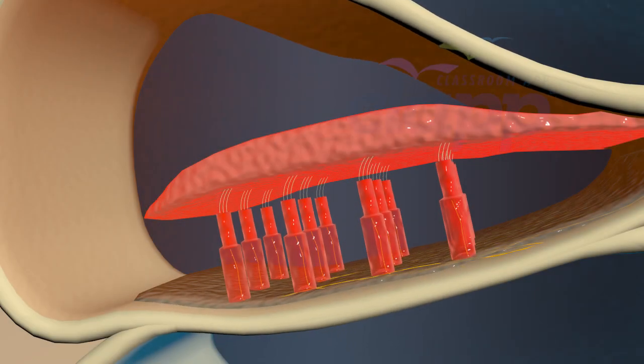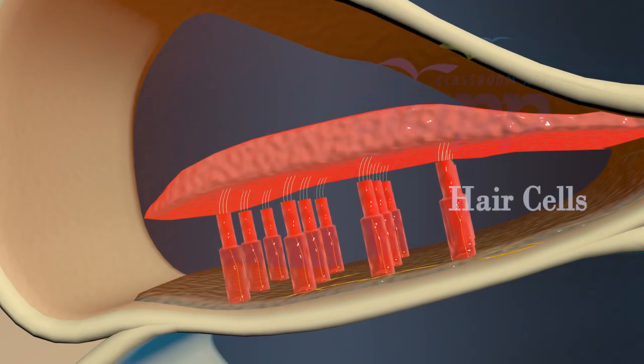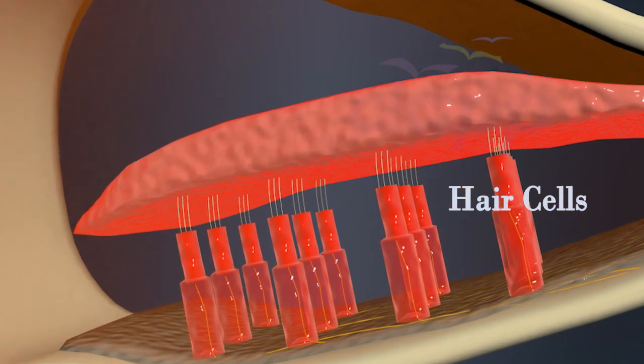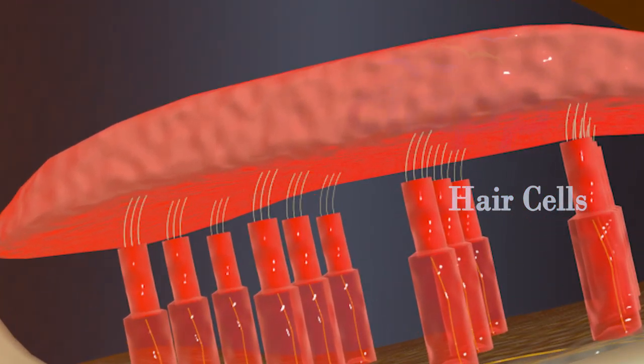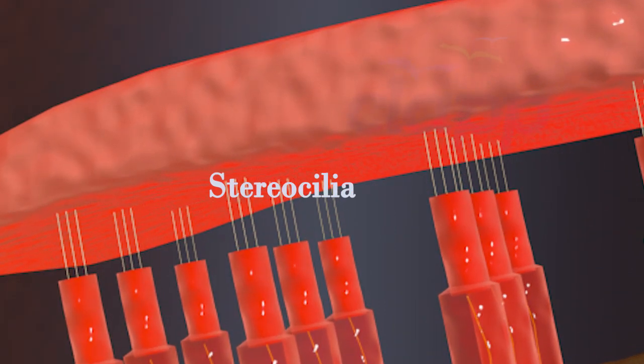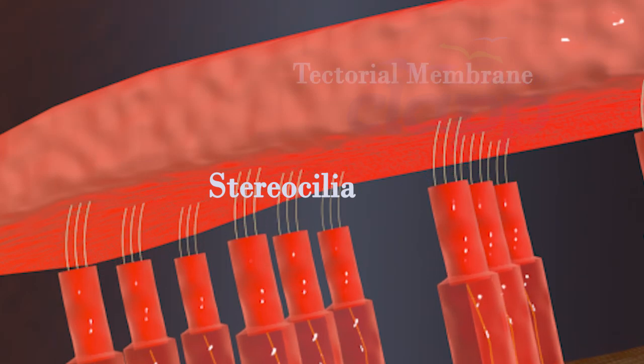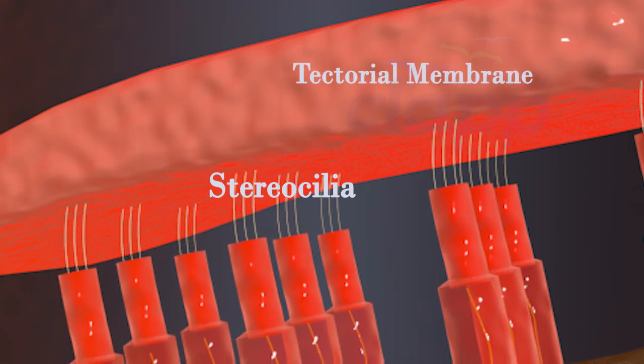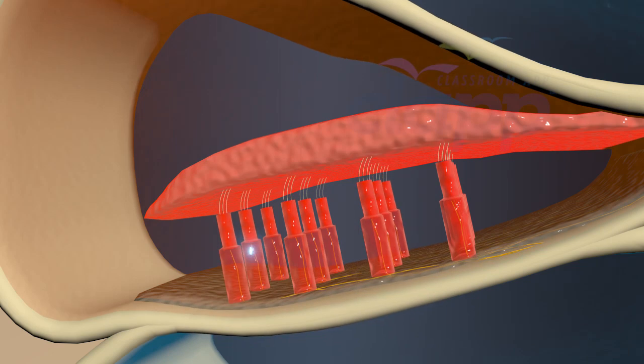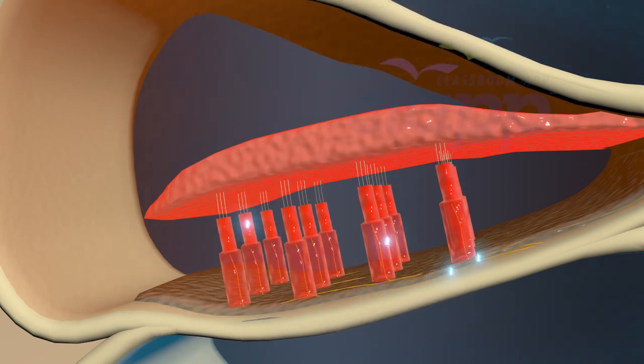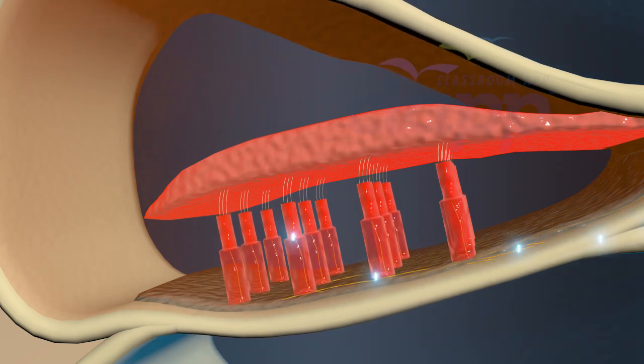The basilar membrane contains thousands of tiny hair cells. These hair cells have hair-like projections called stereocilia that are embedded in an overlying gel-like structure called the tectorial membrane. These hair cells are responsible for transducing sound vibrations into electrical signals.